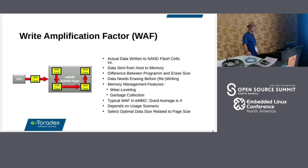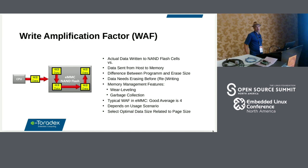The typical write amplification factor in modern eMMC — a good average is around four. But that heavily depends on the usage scenario. One important factor is whether the data size is selected in an optimal fashion concerning the page size — if you have very small files, the write amplification factor will be much worse.